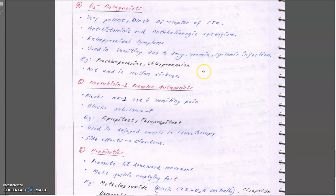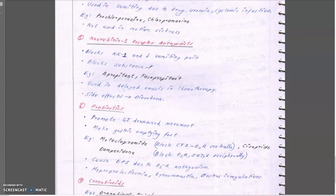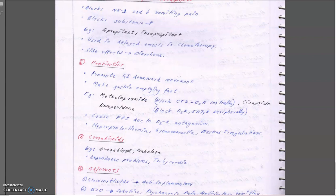Prochlorperazine and chlorpromazine are the main D2 antagonist drugs; they are not used in motion sickness. NK1 receptors in the brain are blocked — endorphins and substance P are blocked — which leads to decreased levels of vomiting-related pain. Whenever we are vomiting we get pain, so the pain must be decreased. The main drugs used to block NK1 receptors and decrease pain are fosaprepitant and aprepitant, used in delayed emesis in chemotherapy.